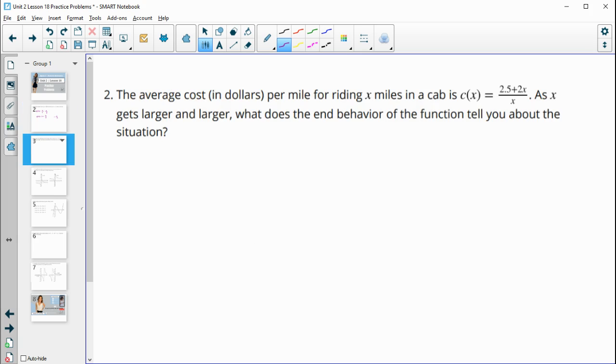Number 2, the average cost in dollars per mile for riding x miles in a cab is modeled by this equation. As x gets larger and larger, what does the end behavior of the function tell you about this situation?